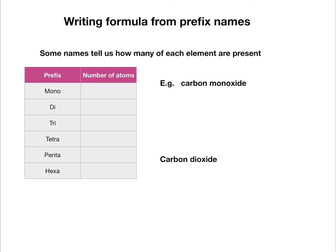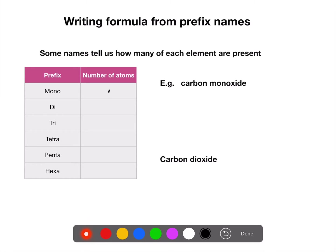Sometimes you'll get given the names of compounds and occasionally they will have what we call prefixes to tell you how many atoms are present. The prefixes we use are: mono for one, di for two, tri for three, tetra for four, penta for five, and hexa for six.